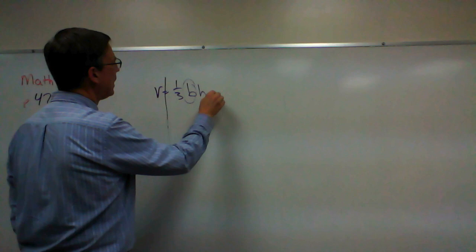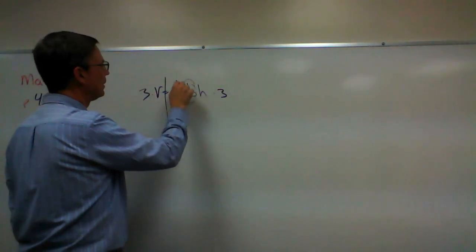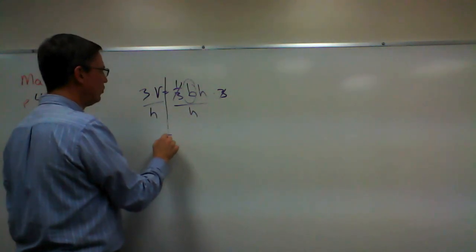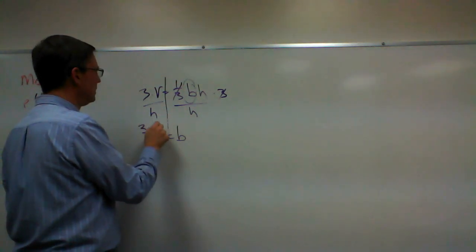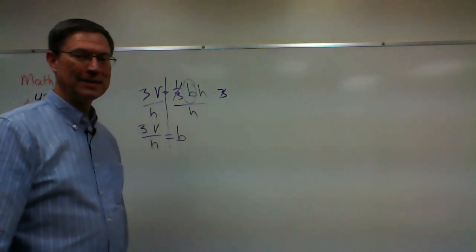So if I multiply both sides by three and then divide, that'll cancel that, and then divide by h, now I have a formula. The base equals three times the volume divided by the height.